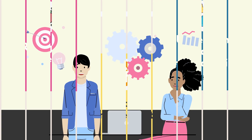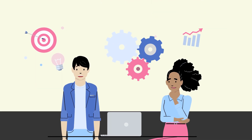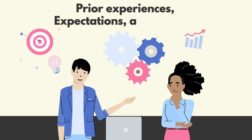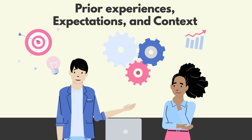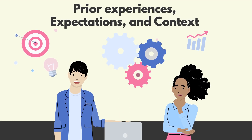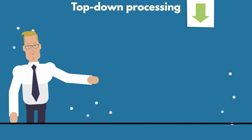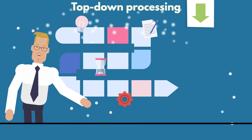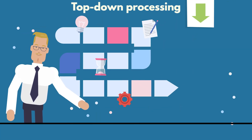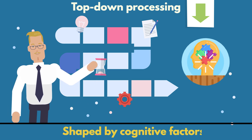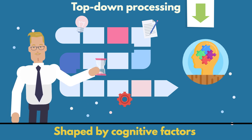Perception is influenced not only by sensory data but also by prior experiences, expectations, and context. This top-down processing means that what we perceive is not just a direct reflection of sensory input, but also shaped by cognitive factors.